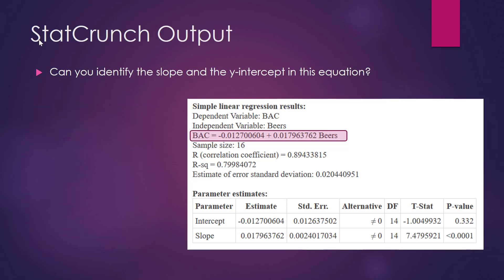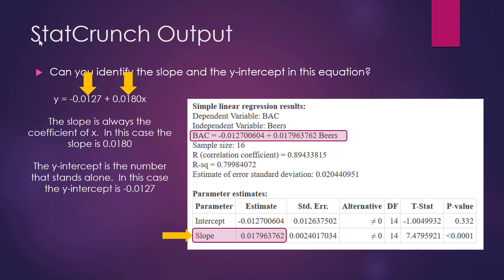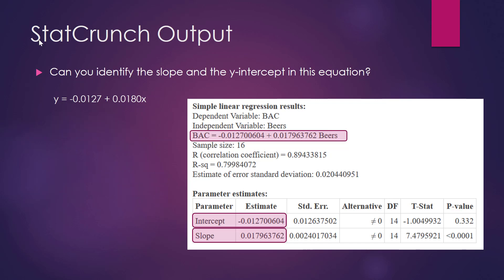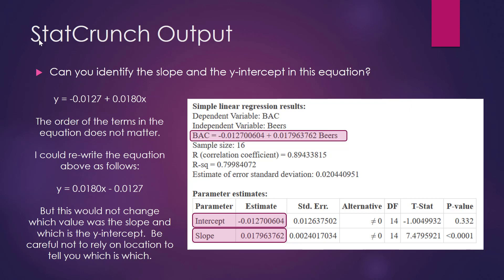Can you identify the slope and the y-intercept in this equation? Pause the video and see if you can. The slope is always the coefficient of X — in this case, the slope is 0.0180, and it is also explicitly stated in the StatCrunch output window. The y-intercept is the number that stands alone; in this case, the y-intercept is negative 0.0127, also explicitly stated in the output. Note: the order of terms in the equation does not matter — be careful not to rely on the location of terms to identify the slope versus the y-intercept.